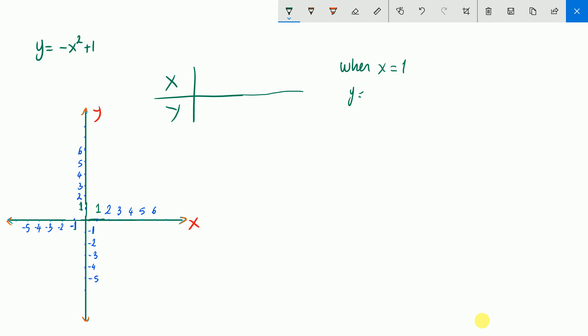So y becomes negative 1 squared plus 1. So it's a little bit tricky here. This 2, just this 2, belongs to 1. So y equals negative 1 times 1 plus 1. Y equals negative 1 plus 1. So y will be 0. When x is 1, y will be 0. Let's write here, we found the first point.